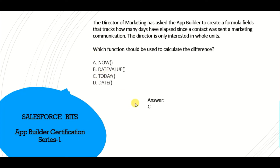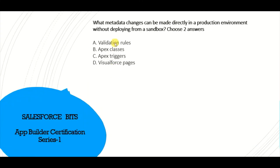Next question: what metadata changes can be made directly in the production environment without deploying from a sandbox? This is pretty straightforward if you've worked with Apex classes. Apex classes and triggers cannot be modified in production. However, you can edit validation rules and Visualforce pages in production. So by default, if Apex and triggers are ruled out, the correct answers are validation rules and Visualforce pages — answers A and D.